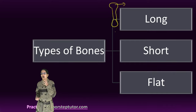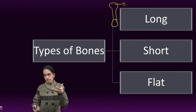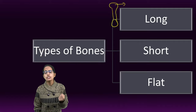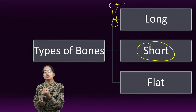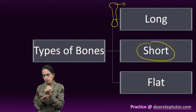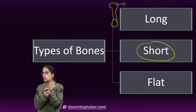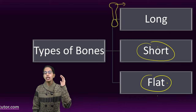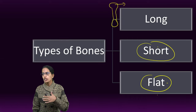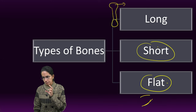Long bones are also present in the ribs and serve as a lever. Short bones are seen in the wrist and ankles — they are ankle-shaped and have gliding joints between them. Flat bones are seen in the skull, ribs, shoulder, and hips. They have two hard plates with bone marrow present between them.